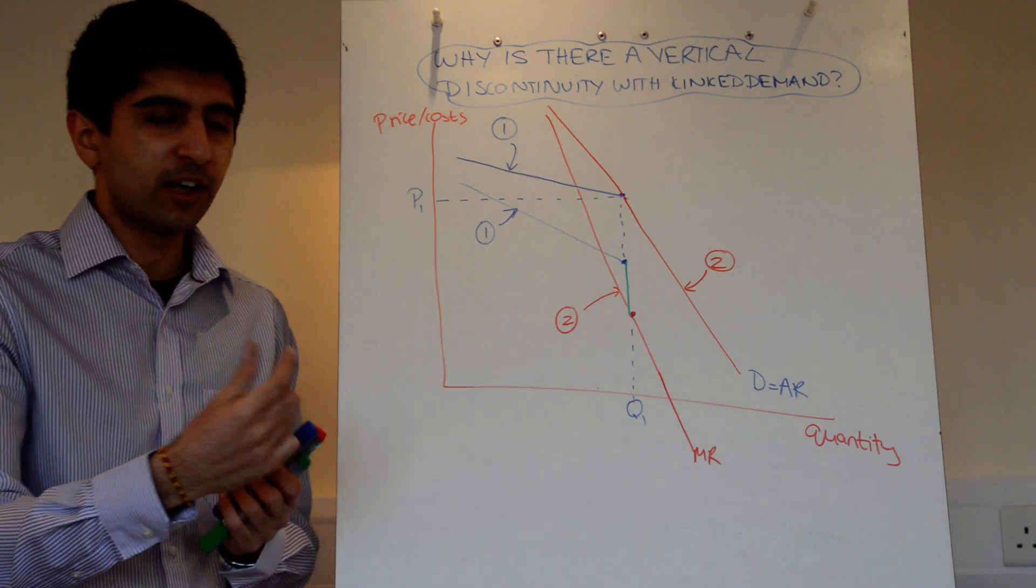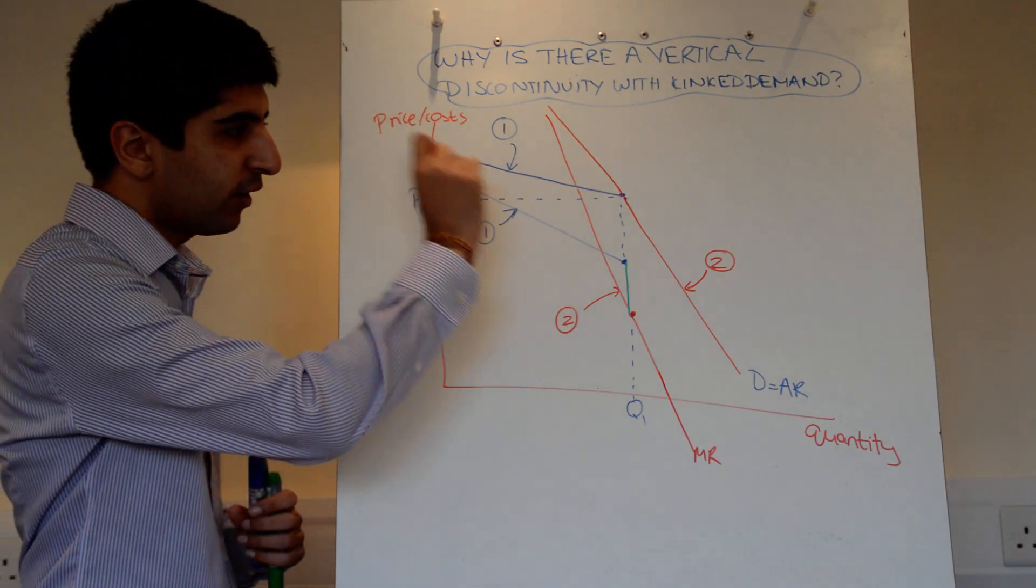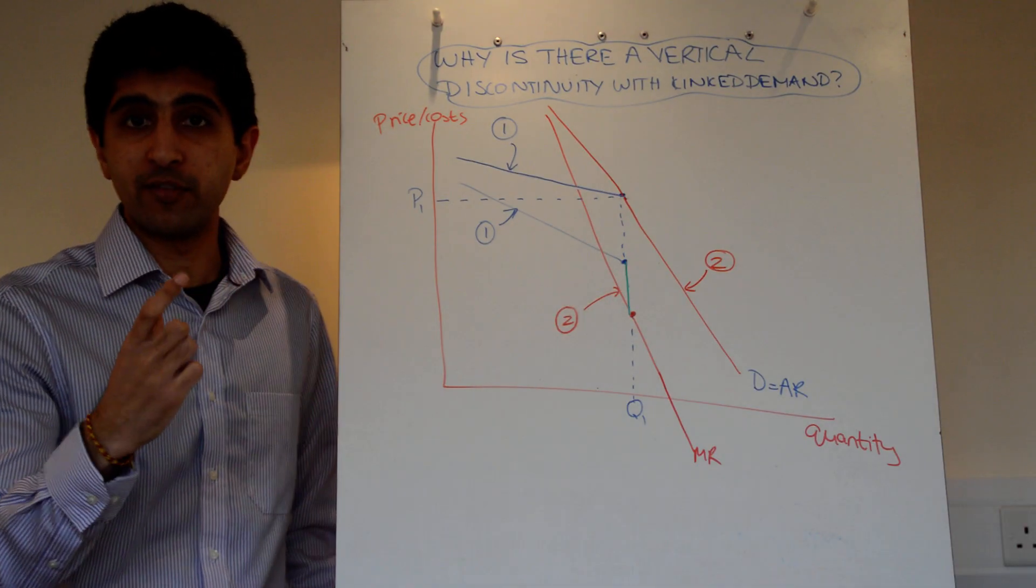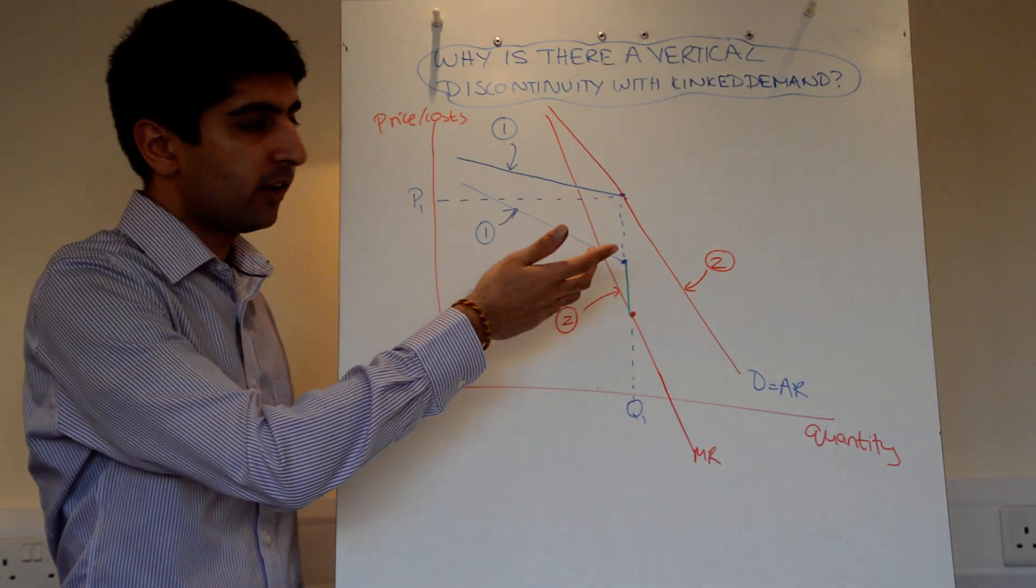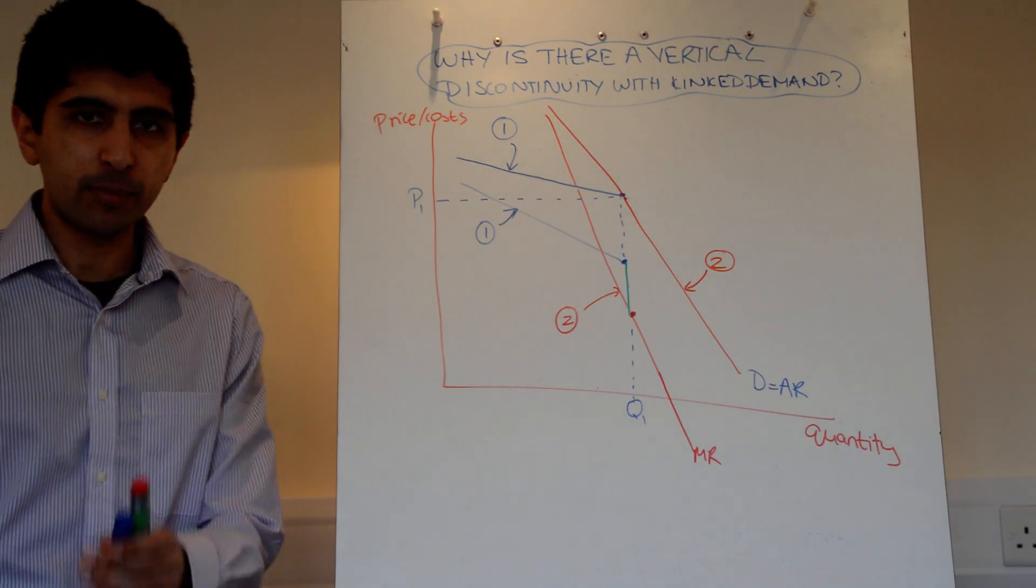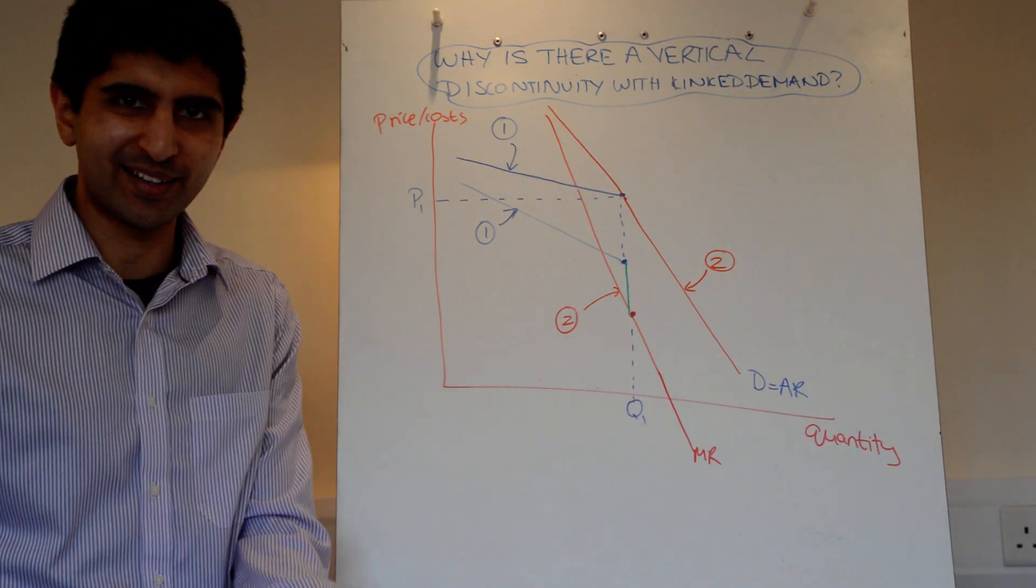If you want to have a go at drawing them, you'll realize. Draw your curves out. Draw every single curve fully, and you'll realize there's always going to be a vertical space there. Which is why when we draw marginal cost curves going through it, we always end up back at p1. I hope that makes sense. Keep it nice and simple. See you next time.